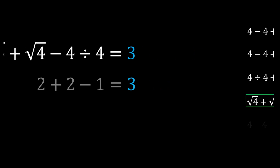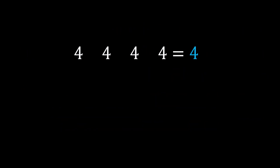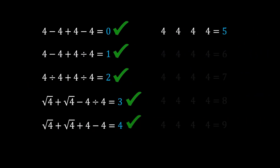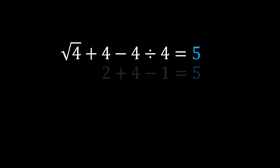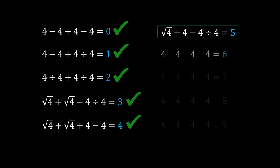For number 4, I used √4 + √4 + 4 − 4, which is 2 + 2, and 4 and −4 cancel out, giving 4. For number 5: √4 + 4 + 4 ÷ 4 wait — √4 + 4 − 4 ÷ 4, which is 2 + 4 − 1 = 5.